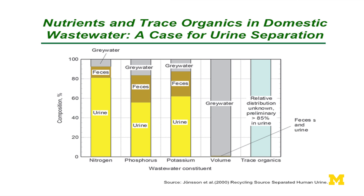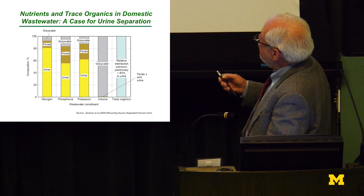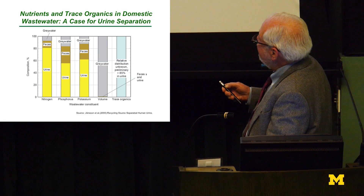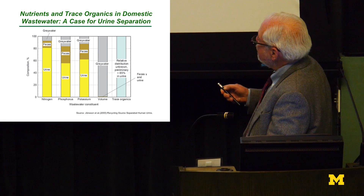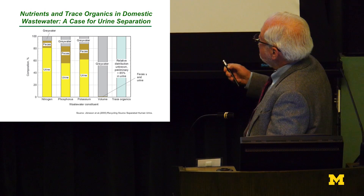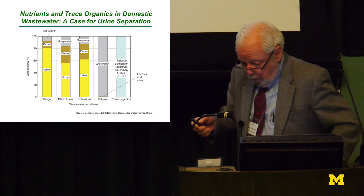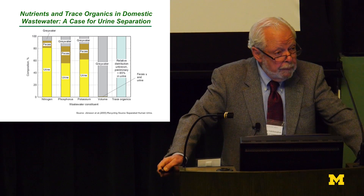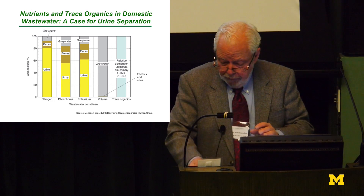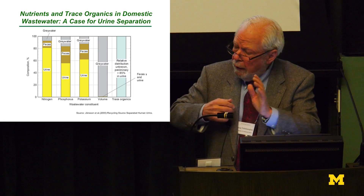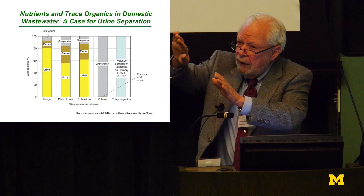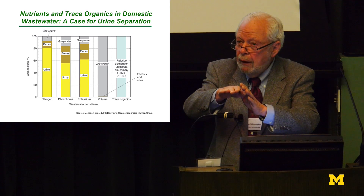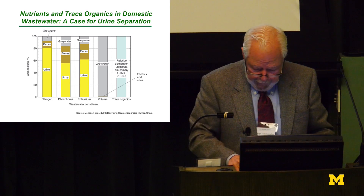Looking at urine: nitrogen, phosphorus, and potassium are essentially all in urine. The volume ratio of feces to urine to gray water shows a rather strange system. It's now estimated that about up to 90% of trace organics and medicines are in urine. When you take medicine, the dose is much higher than you need because you need a driving force to get the active agent into the cell wall, and the excess goes off in urine.